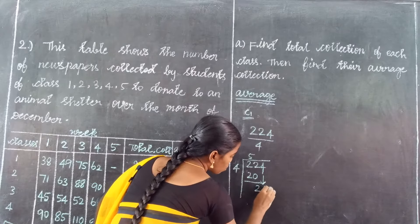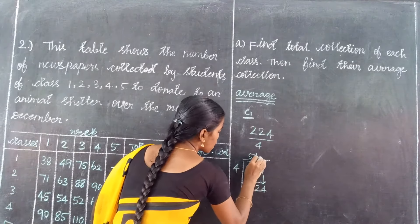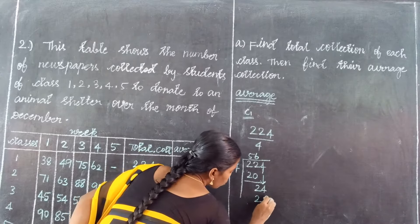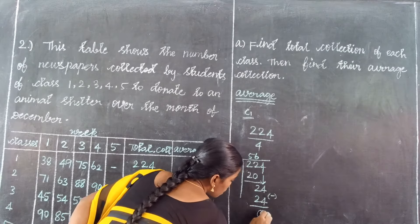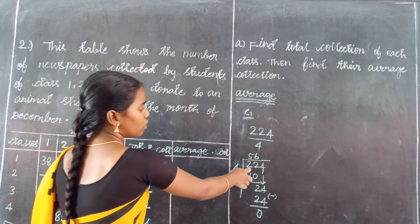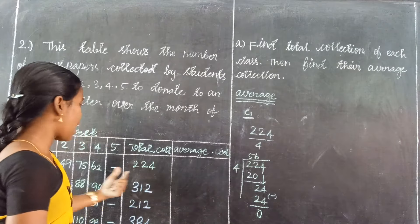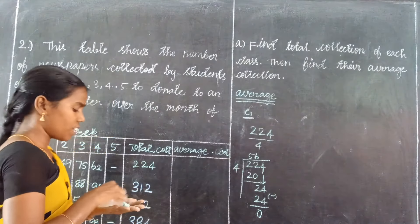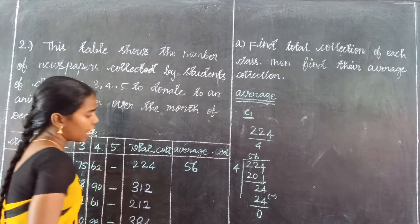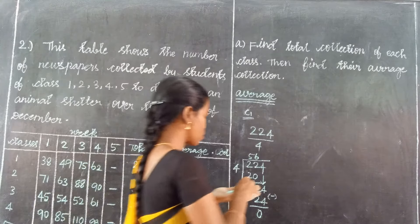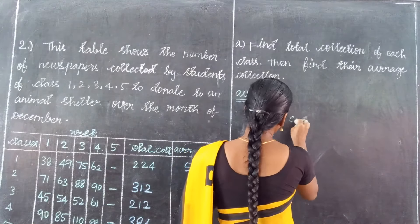Consider the first 2 digits: 22 divided by 4. Then consider 24 — 6 fours are 24, so 24 minus 24 equals 0. So the Class 1 average is 56. The first class average value is 56.